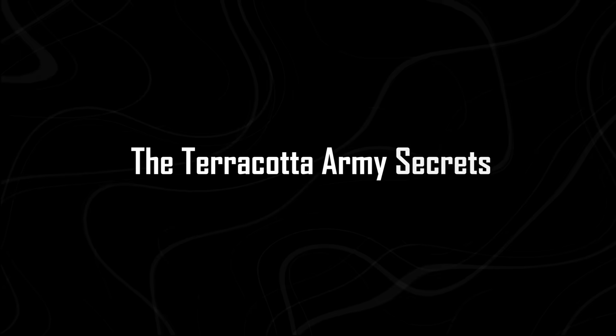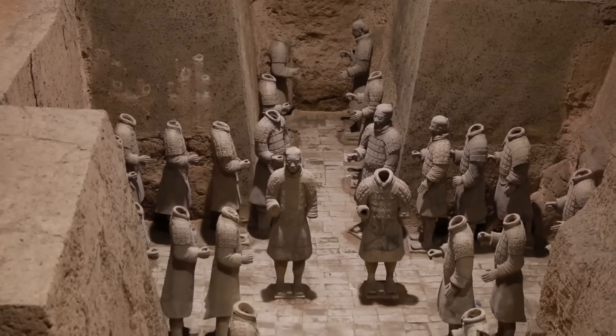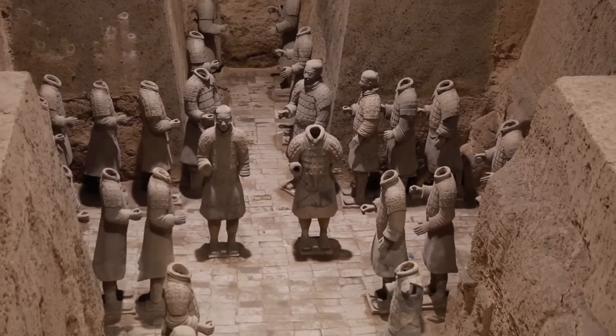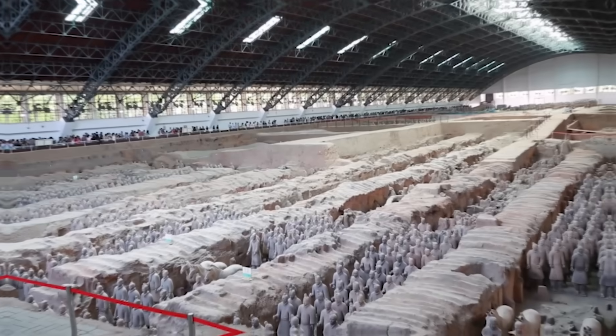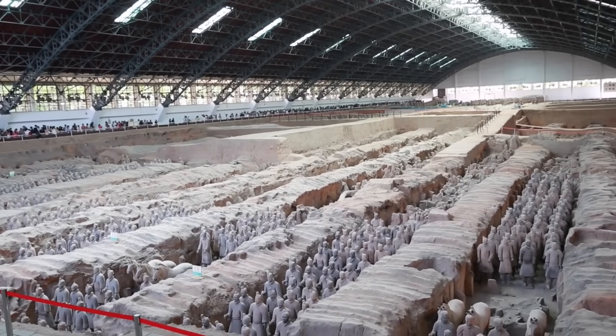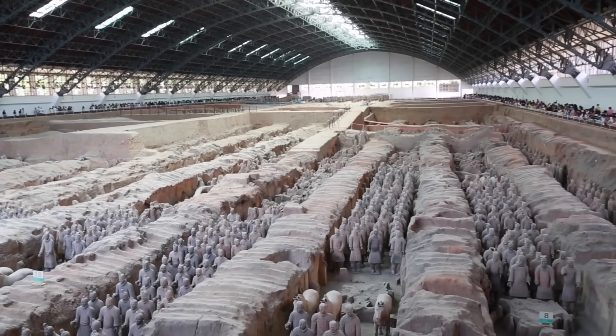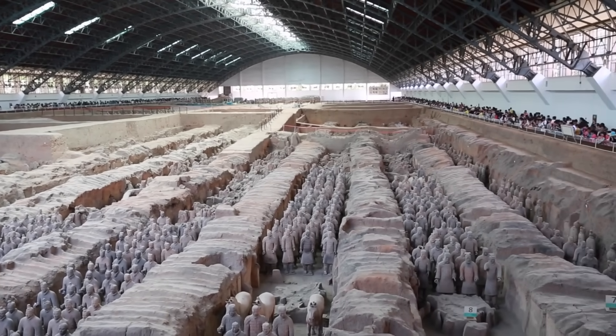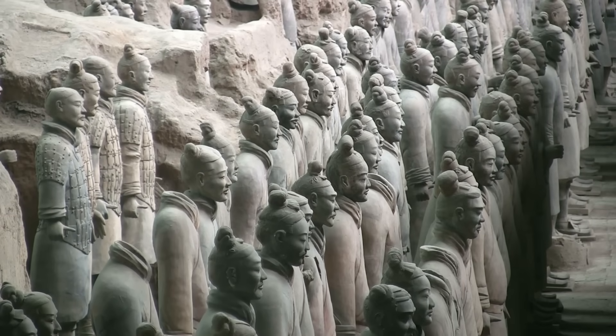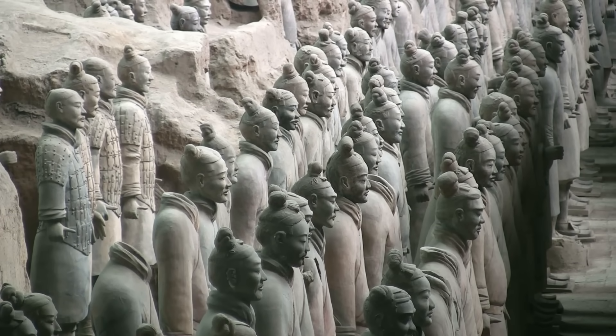The Terracotta Army Secrets. The Terracotta Army in China has always been one of archaeology's greatest mysteries. Thousands of life-sized clay soldiers have stood guard over Emperor Qin Shi Huang's tomb for more than 2,000 years. Yet, so much about how they were made remained unknown. Recently, researchers used AI and spectroscopy to study microscopic pigment traces in soil samples around the site.